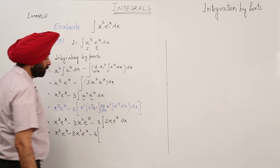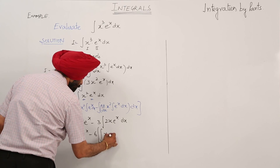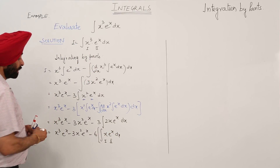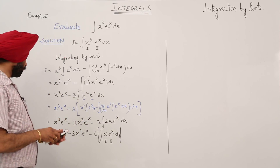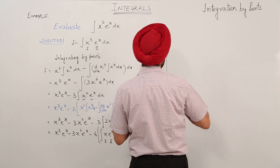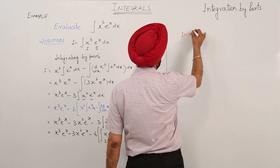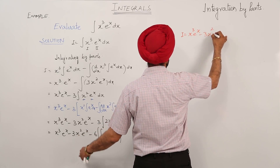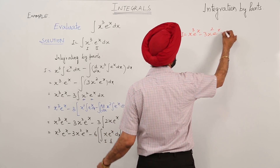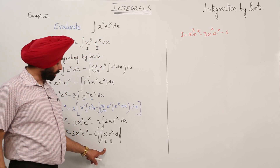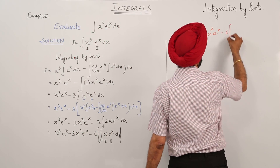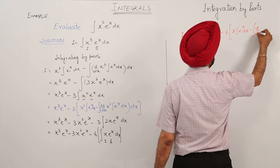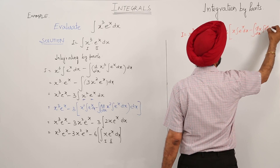Now again we are going to integrate this one — integration of x e raise to power x dx — taking x as first function and e raise to power x as second. Applying integration by parts: x times integration of e raise to power x dx, minus integration of d by dx of x with integration of e raise to power x dx.